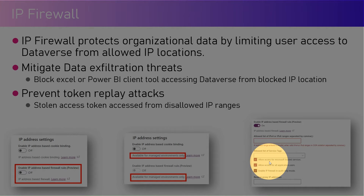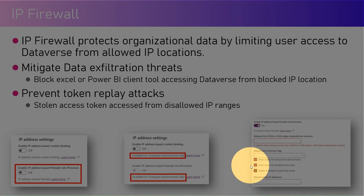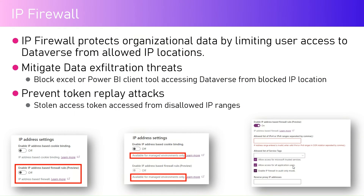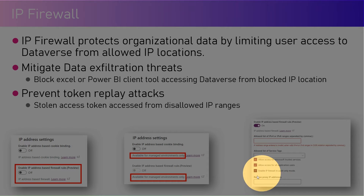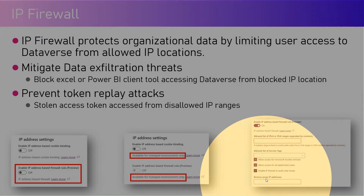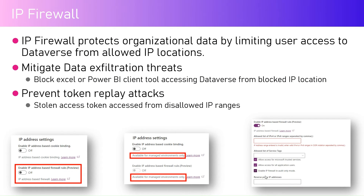You can selectively specify whether you want to receive information from Microsoft trusted sources. You can also allow access for all application users — users created using Azure Active Directory. If you have a reverse proxy address, you can specify that so only requests received at that IP address will be honored. You can also enable IP firewall in audit-only mode.